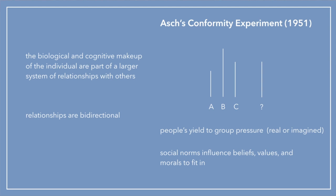After about 12 trials, about 75% of participants conformed at least once, and 25% never conformed. In the control group, where there was no pressure to conform to confederates, less than 1% gave the wrong answer. This shows people's tendency to yield to group pressure, whether real or imagined, and that social norms influence beliefs, values, and morals in order to fit in.